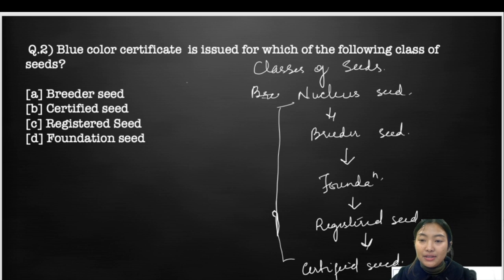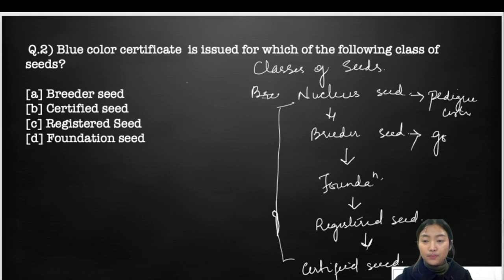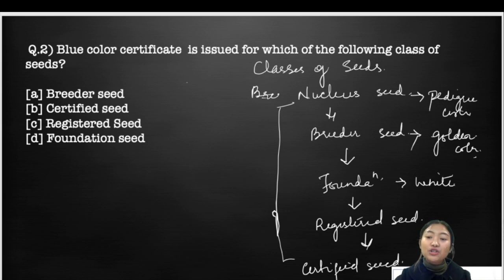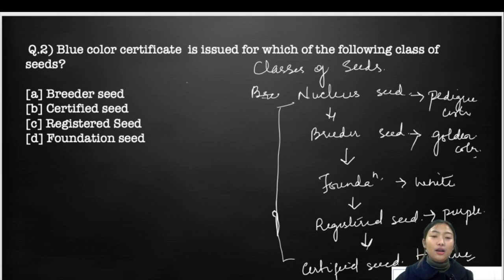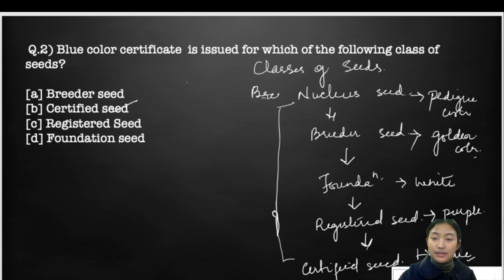So the blue color certificate is issued for which of the following seeds? For nucleus seeds, a pedigree certificate is issued. For breeder seed, a golden colored certificate or tag is issued. For foundation seed, it is white. For registered seed, it is purple in color. And for certified seed, it is blue in color. So the answer for this question is certified seed.